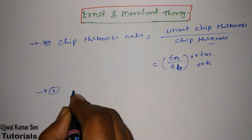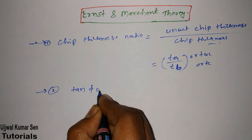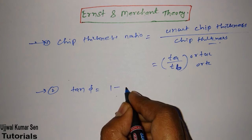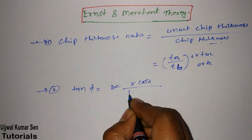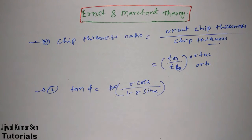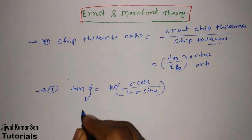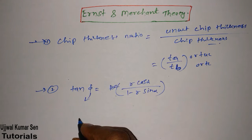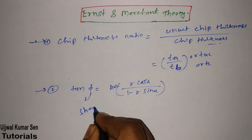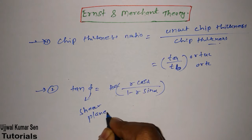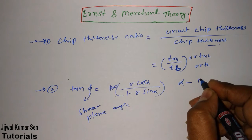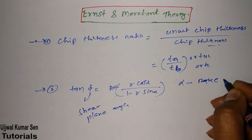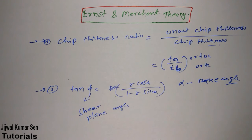The second and most important formula is: tan(φ) = r·cos(α) / (1 − r·sin(α)), where φ is known as the shear plane angle and α is known as the rake angle — sometimes also called the side rake angle.